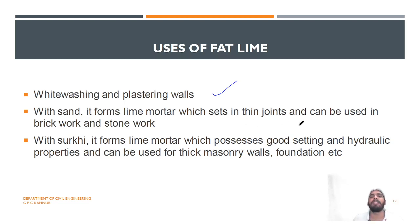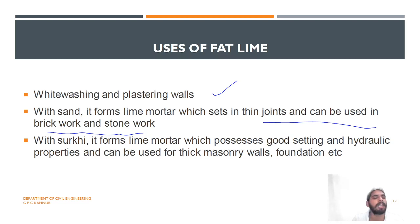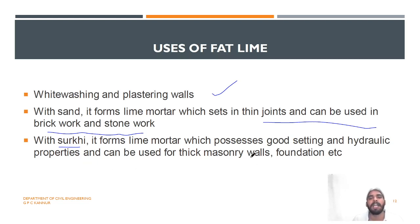With sand, fat lime forms lime mortar which sets in thin joints and can be used in brickwork or stonework. With surkhi — another type of binding agent — it forms lime mortar which possesses good setting and hydraulic properties and can be used in thick masonry walls, foundations, etc.